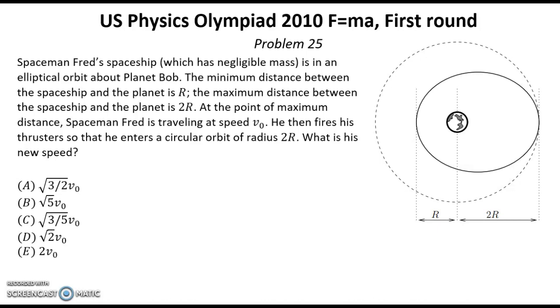He then fires his thrusters so that he enters a circular orbit of radius 2R. What is his new speed?